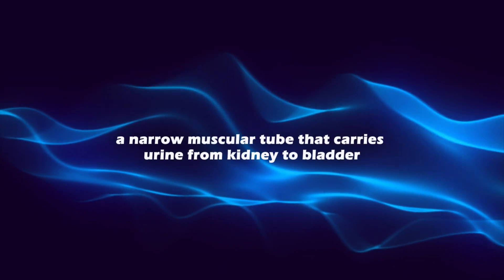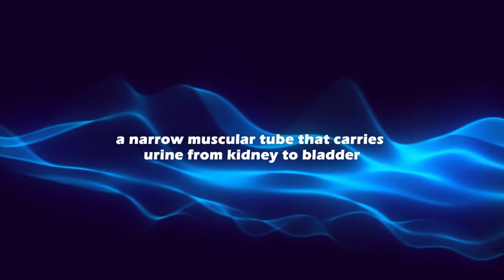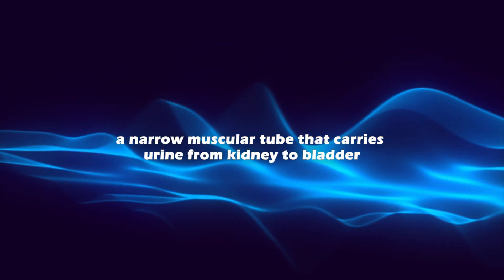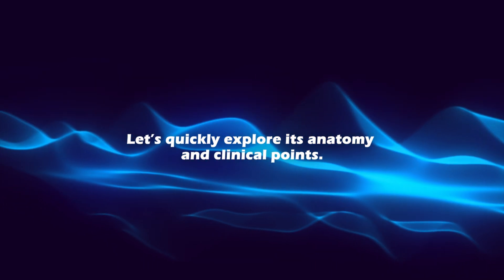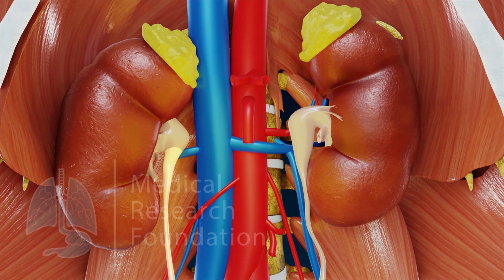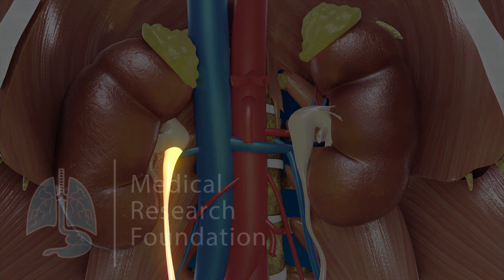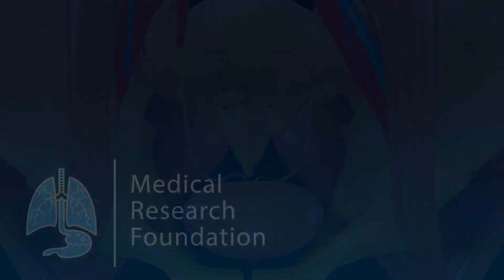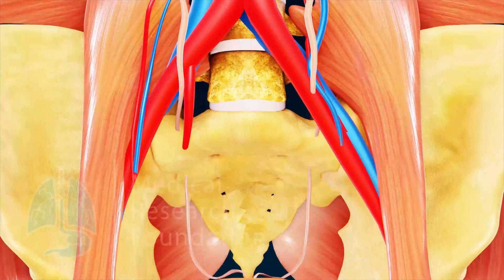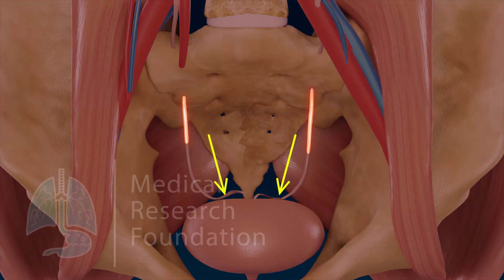The ureter is a narrow thick-walled muscular tube which conveys urine from the kidney to the urinary bladder. The urine is propelled from the kidney to the urinary bladder by the peristaltic contractions of the smooth muscle of the wall of the ureter.